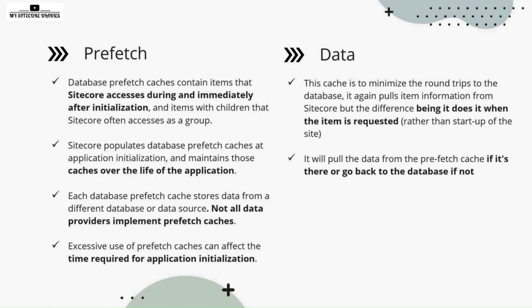It will pull the data from the pre-page cache if it is there, or go back to the database if not. As we have already seen in the layers, if the data is available in the pre-page cache it gets it from there. If not, it will look in the data cache. If it is not there either, it will go to the database, build the data cache, and then send the response.